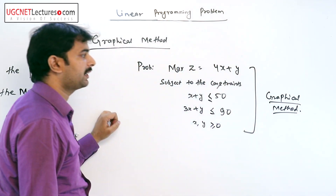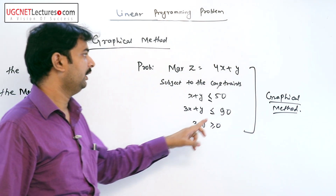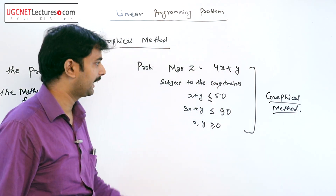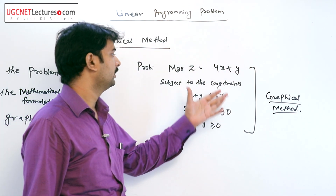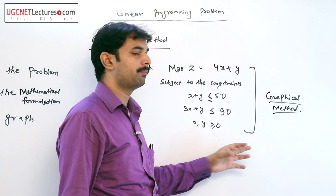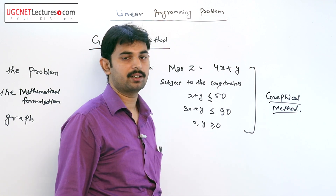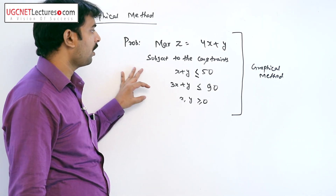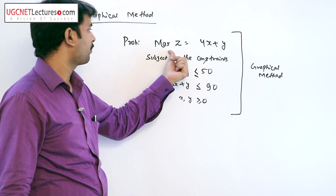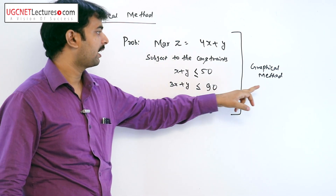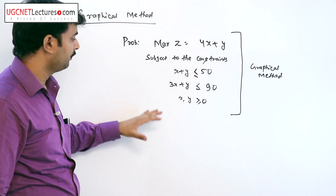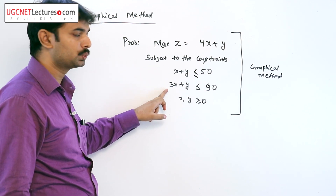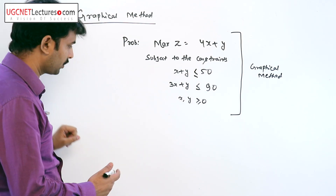In the graphical method, since the decision variables are two, we can solve this problem graphically. To do so, we first plot a graph between these two constraints.